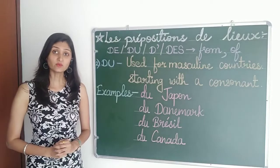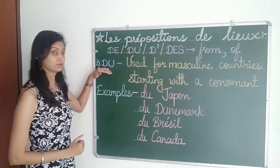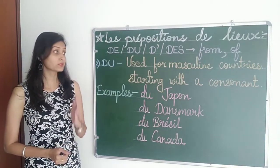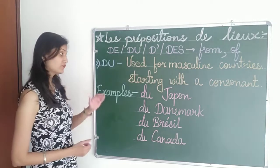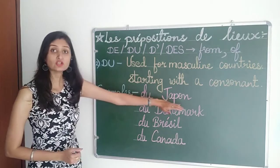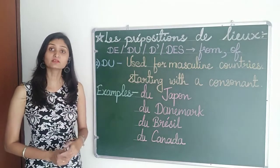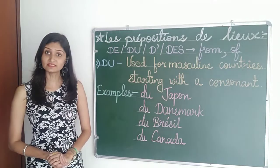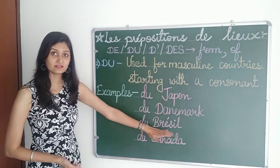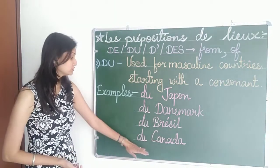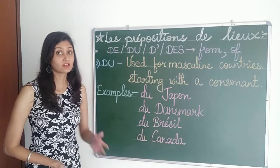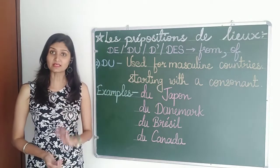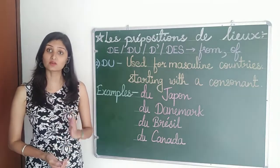The second preposition is du. It is used for masculine countries starting with a consonant. For example, du Japon — from Japan. Du Danemark — from Denmark. Du Brésil — from Brazil. Du Canada — from Canada. So du is used for masculine countries starting with a consonant.